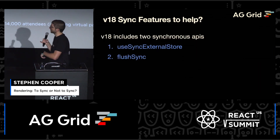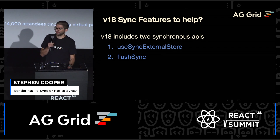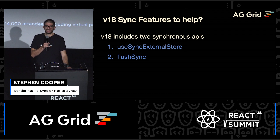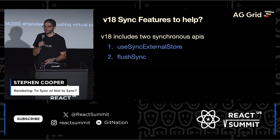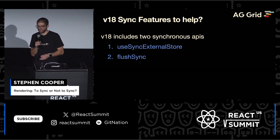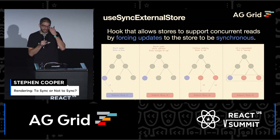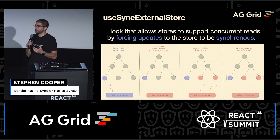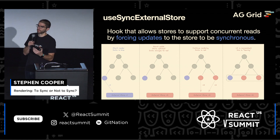But back to the issue — we've still got to solve this bug because we can't ship this product in the state that it was in. In the documentation, there are two features which contain the word sync: useSyncExternalStore and also flushSync. So we'll start with useSyncExternalStore. As the name suggests, it's a way for you to support concurrent reads by forcing updates from a store to be synchronous. And this is all to do with visual tearing, which is the term.